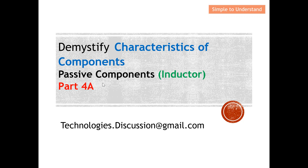Under Part 4A I'm going to discuss the equivalent circuit of an inductor and how Q changes with frequency. Under Part 4B I'm going to discuss how we can increase the Q value. Under Part 4C I'm going to discuss how to wind a coil to achieve a certain inductance value by changing the length of the coil, the radius of the coil, and the number of turns, and how these three parameters affect the inductor value.